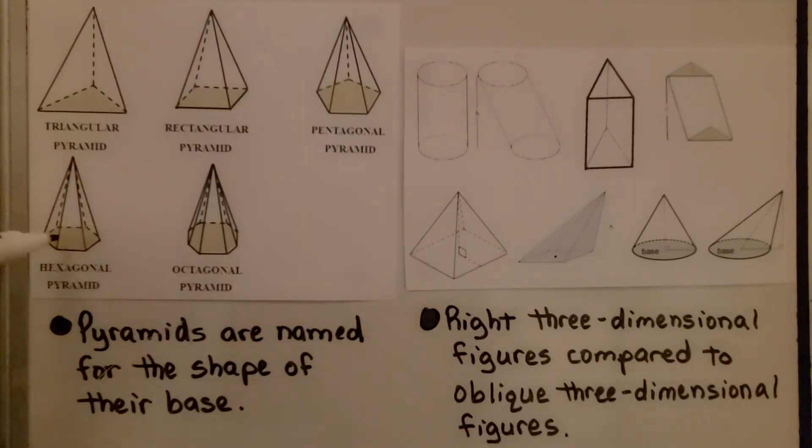This is a hexagon, so this is a hexagonal pyramid. And this is an octagon, this is an octagonal pyramid. And right three-dimensional figures can be compared to oblique three-dimensional figures.